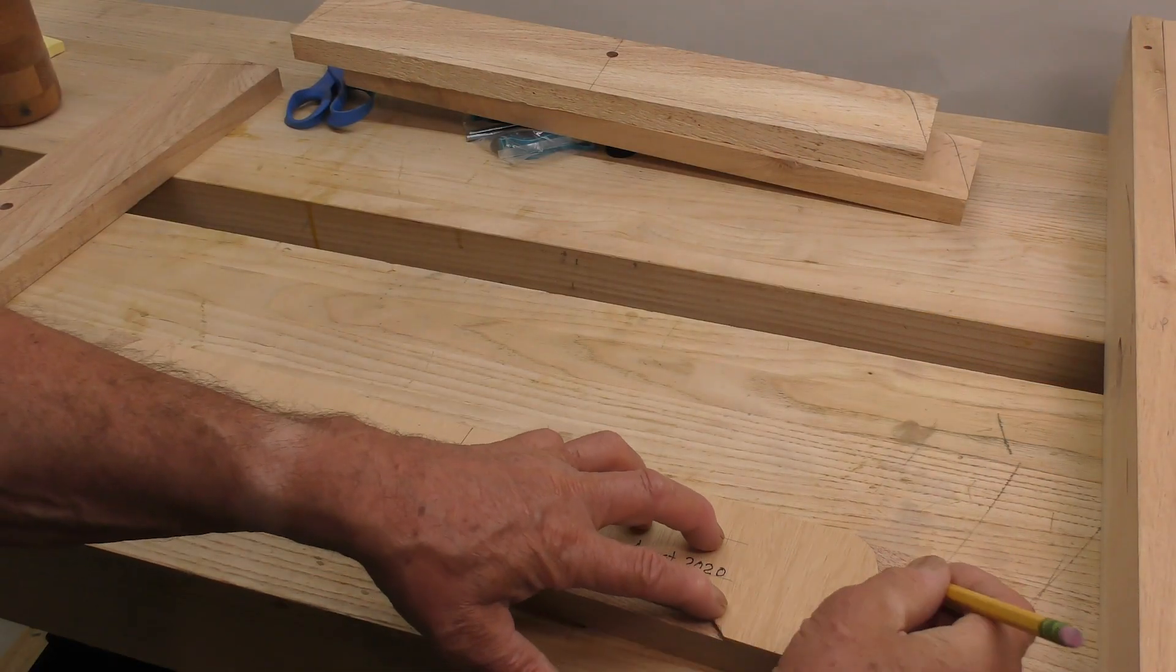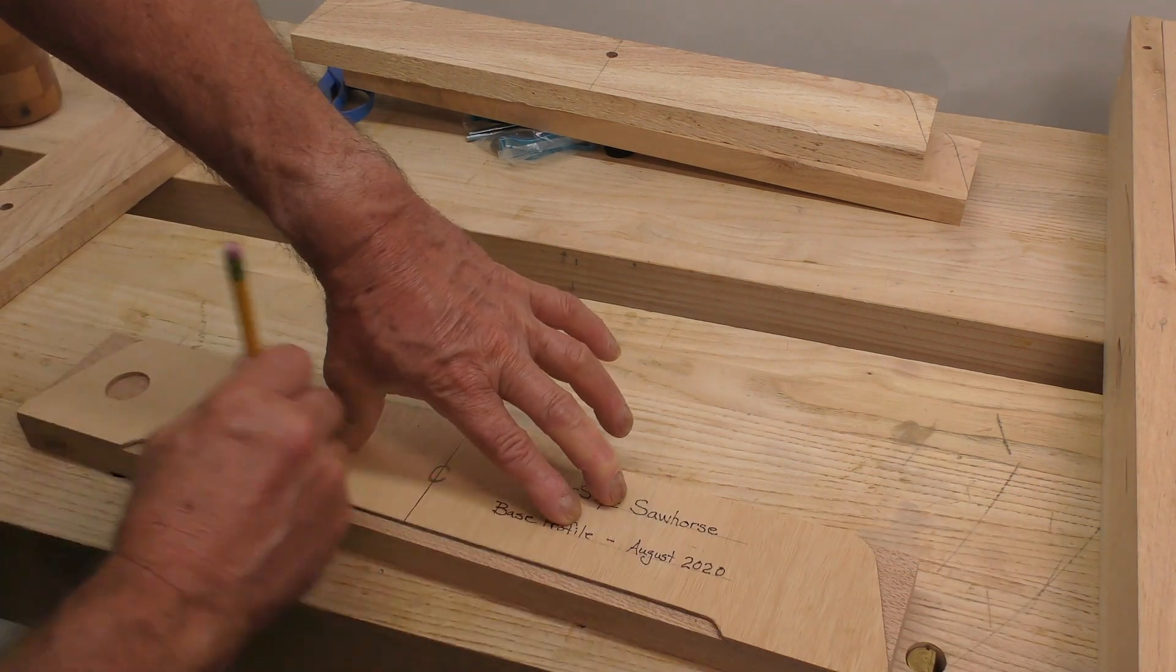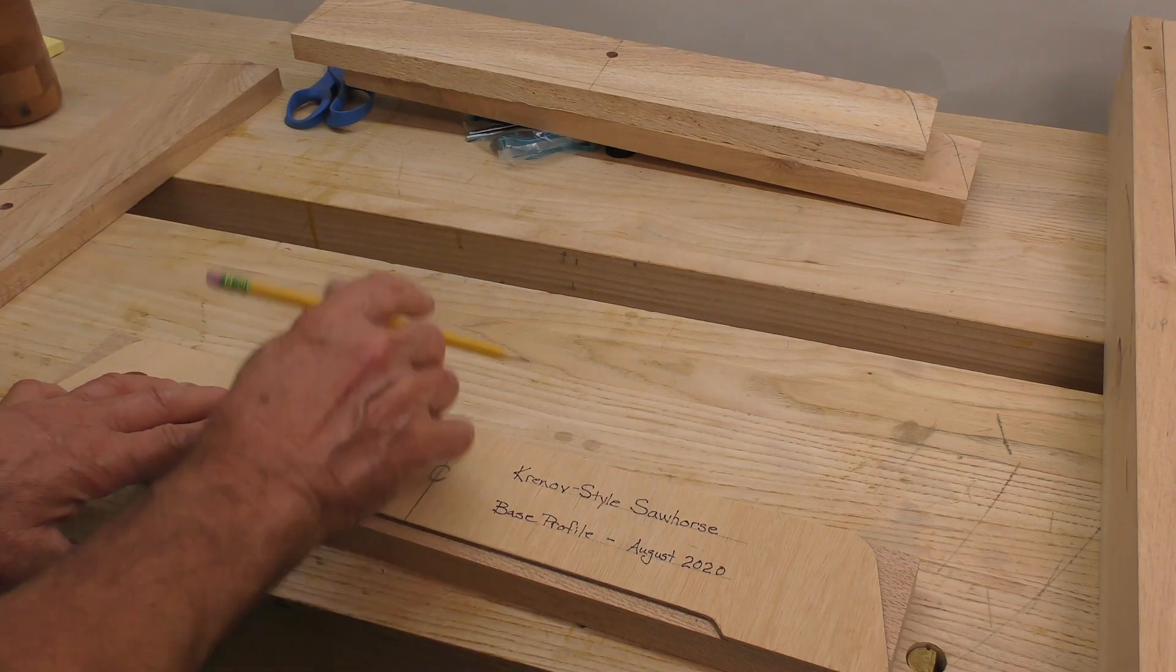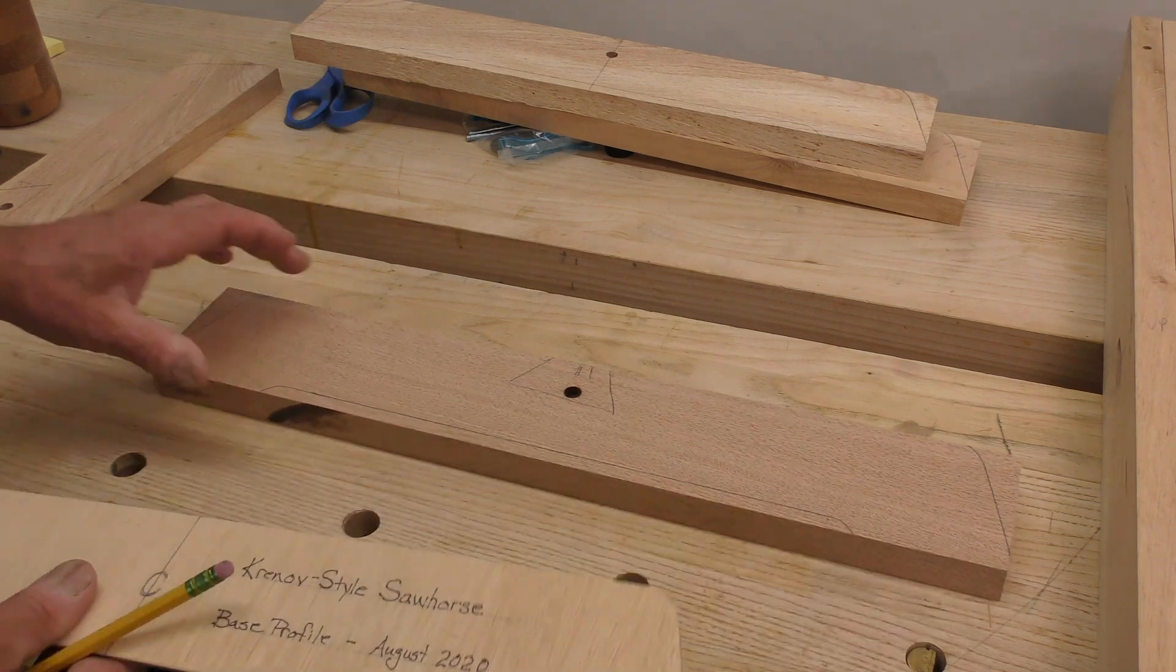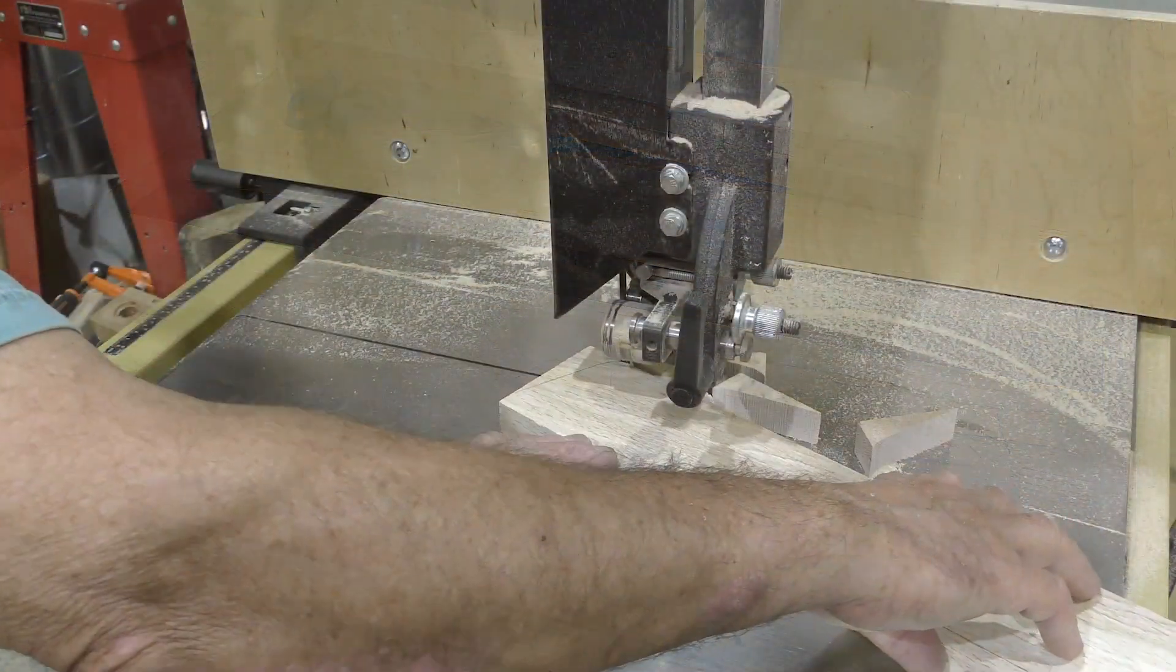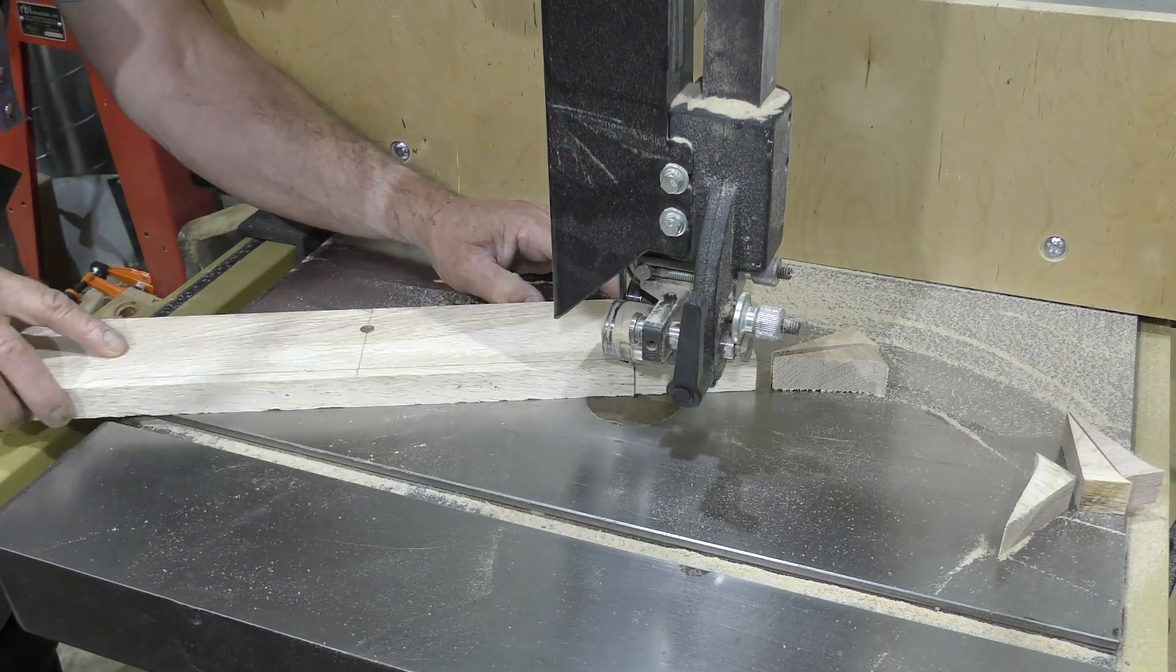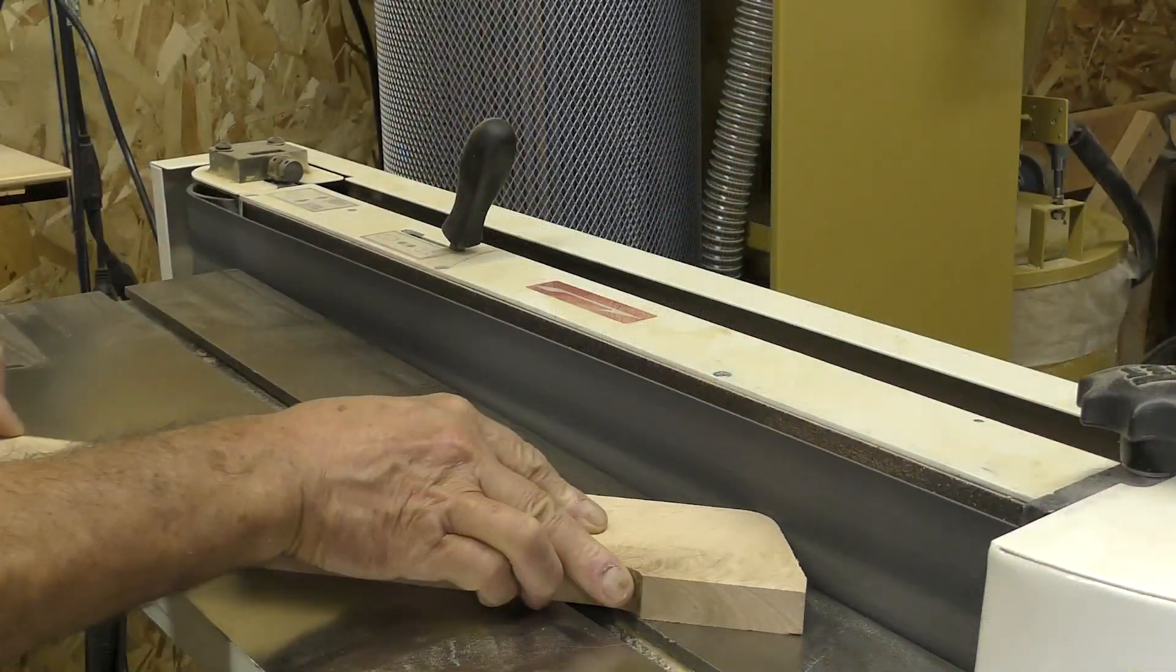We made a pattern jig for the base piece and this time we cut very little wood away in order to keep some weight down low. The bandsaw makes quick work of the shaping, then a pass on the belt sander, and another on the drum sander, and we're ready to glue it all up.